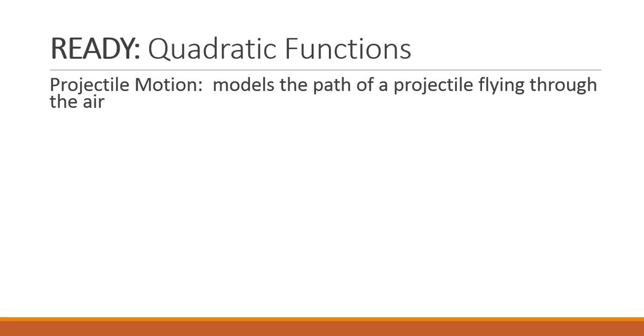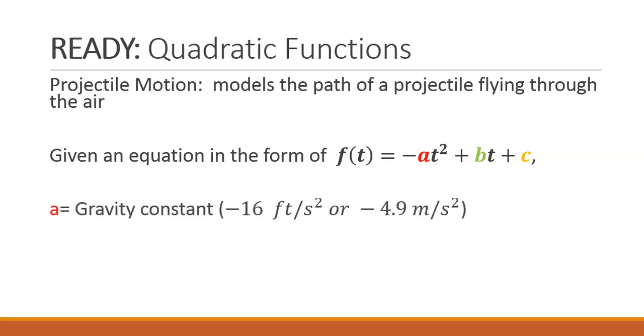We see a projectile motion question in the Ready that models the path of a projectile flying through the air. Given an equation in the form f of t equals negative at squared plus bt plus c, our a is equivalent to our gravity constant, or negative 16 feet per second squared, or negative 4.9 meters per second squared. Our b value is our initial velocity, and our c value is our initial height in feet or meters.